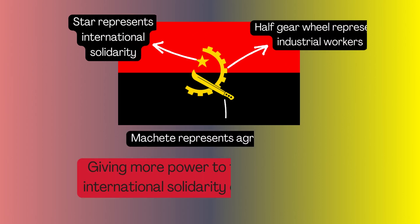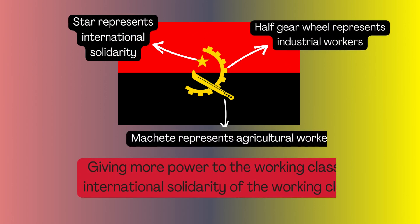The half-gear wheel represents the industrial workers, the machete represents the agricultural workers, and the star stands for international solidarity. Putting this all together, the Angolan flag symbolizes the communist or socialist message of giving more power to the working class and the need for global solidarity of agricultural and industrial workers.